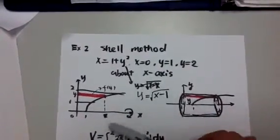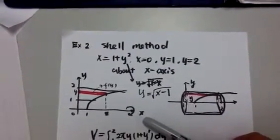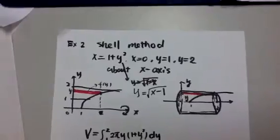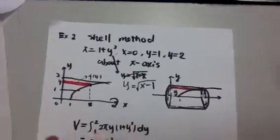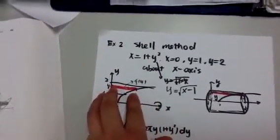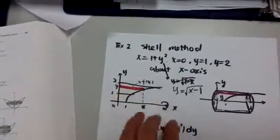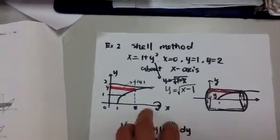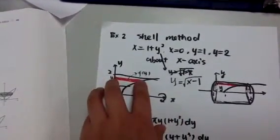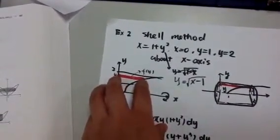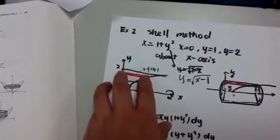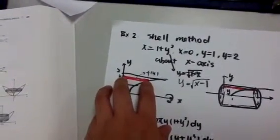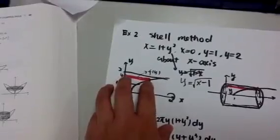And now I'm going to rotate this about x-axis. In order to get the volume of this revolution, I put a generic rectangle here. Because it is rotating about x-axis, I'm going to use a horizontal rectangle. So this rectangle is horizontally set here.